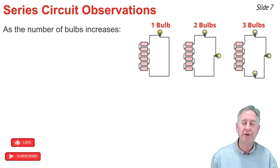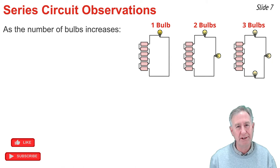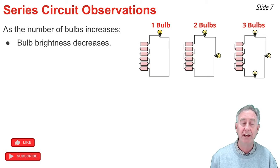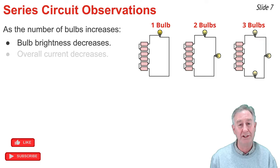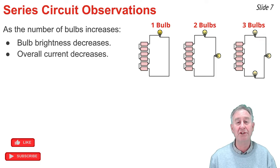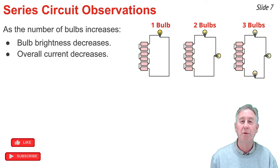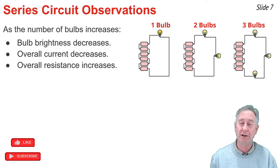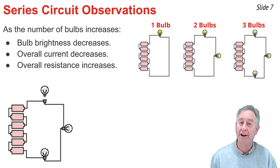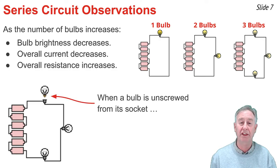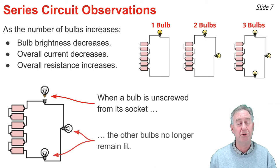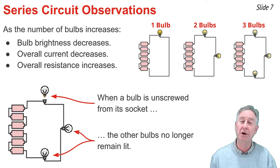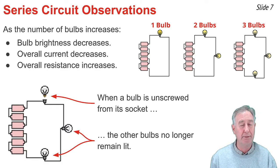A common lab procedure involves increasing the number of light bulbs in a series circuit to observe its effect. We observe that increasing the number of light bulbs causes the brightness of each individual bulb to decrease — an indicator that the overall current has also decreased. This supports the claim that increasing the number of resistors in a series circuit increases overall resistance and decreases overall current. Another common procedure involves unscrewing a bulb from its socket. For a series circuit, unscrewing a light bulb causes the other bulbs to no longer light, since there is only one pathway for charge and interrupting it stops all bulbs.